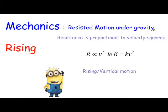Welcome to Maths with Bob. Today we're looking at resistant motion under gravity, under the umbrella of mechanics. We're looking at resistance being proportional to velocity squared this time, whereas it was just proportional to velocity in the last video. So we now have R equals kv squared.